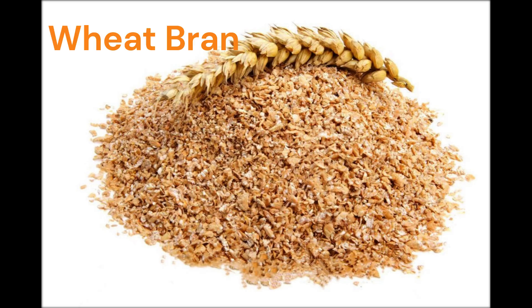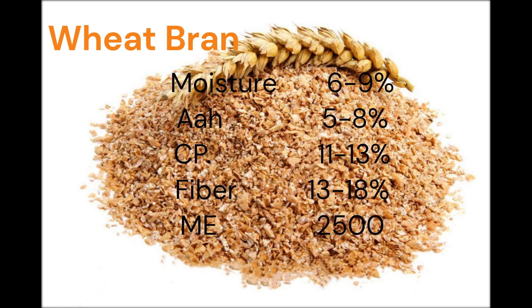Next is wheat bran. It contains standard moisture 6-9%, ash 5-8%, crude protein 11-13%, fiber 13-18%, and metabolizable energy 2,500.